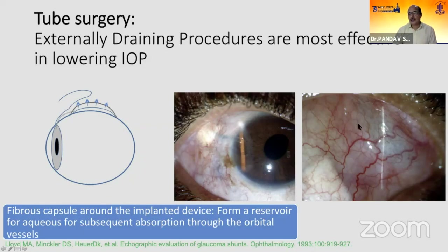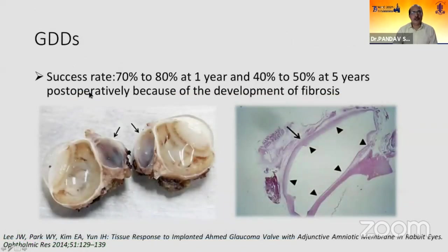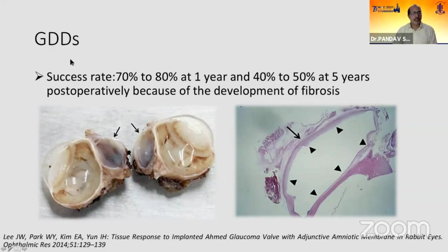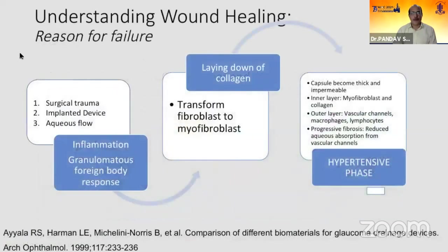The efficacy of the procedure depends on how much fluid can get through the fibrous capsule. GDDs have a success rate of around 70% to 80%, but it tends to go down with time, potentially as low as 40% to 50%. Histological studies suggest there is a lot of thick fibrous capsule around these eyes, formed over a period of time.